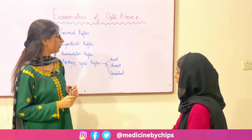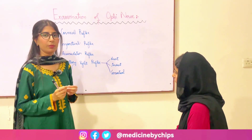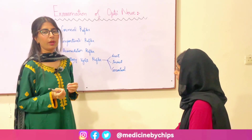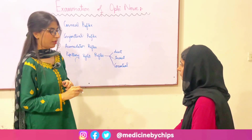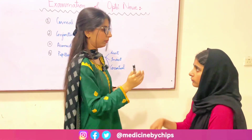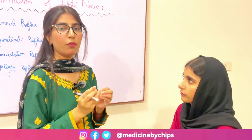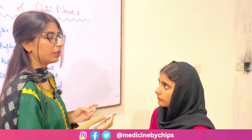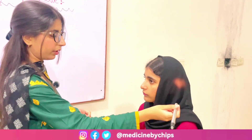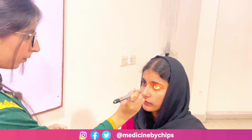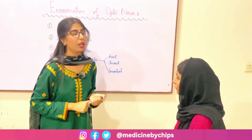In the consensual light reflex we are going to look for the constriction of the pupil in the eye opposite to the one in which the light is being thrown. There won't be any partition — it is similar to the direct light reflex. As we can see, there is constriction of the pupil in the eye opposite to the one in which the light is being thrown.